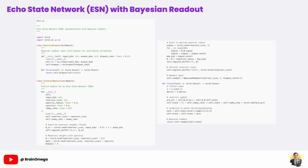The connection weights are set at initialization and not updated during learning. To make this reservoir useful, we carefully control its properties. The W_in matrix connects the input to the reservoir. It's randomly initialized and scaled to ensure inputs are distributed widely across the reservoir units, providing a rich set of responses to every new input.